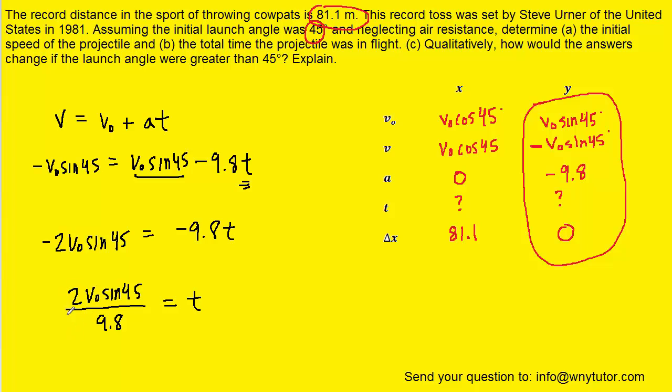We can reduce the fraction by dividing top by 2 to get 1 and bottom by 2 to get 4.9. So we now have an expression for time: t = V0 sin 45 / 4.9. We can come back and fill that into our table for both the y and x components, because the time in those two directions will be the same.